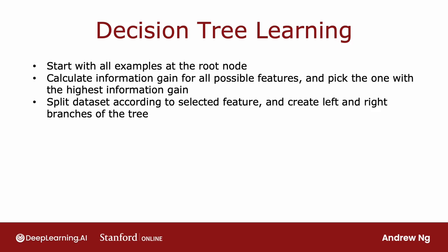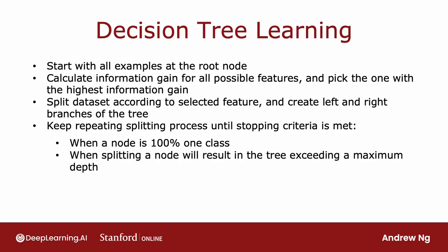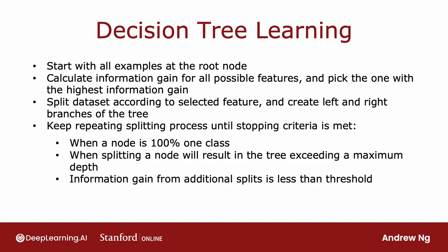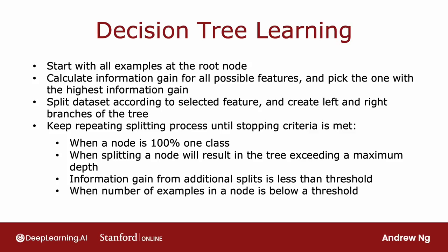After that, you would keep on repeating the splitting process on the left branch and the right branch, and so on, until the stopping criteria is met. The stopping criteria can be when a node is 100% a single class — when it has reached entropy of zero — or when further splitting a node would cause the tree to exceed the maximum depth you have set, or if the information gain from an additional split is less than a threshold, or if the number of examples in a node is below a threshold.